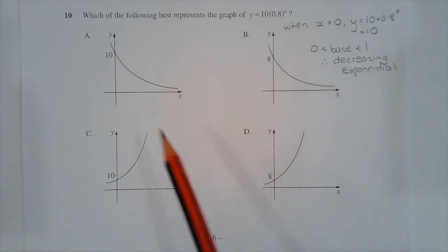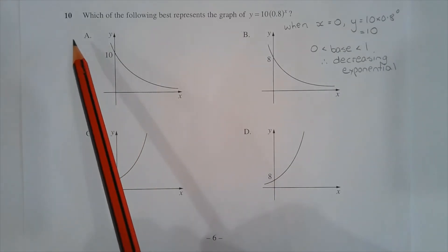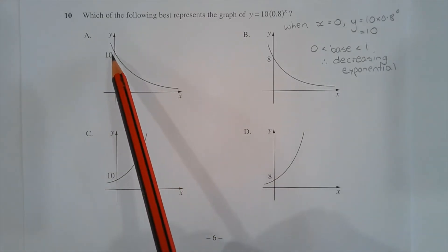Therefore, out of A or C, option A shows a decreasing exponential graph with a y-intercept of 10. So therefore the answer is option A.